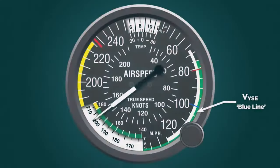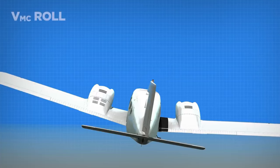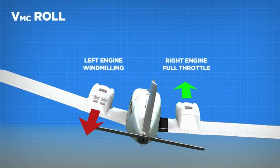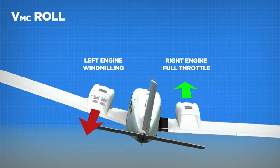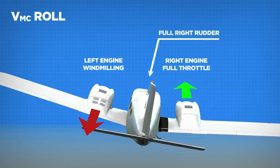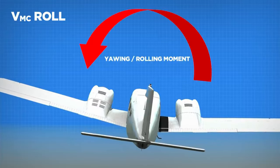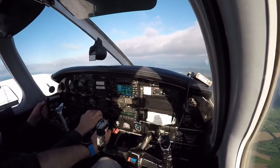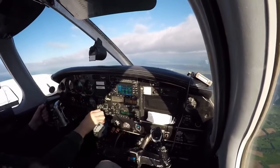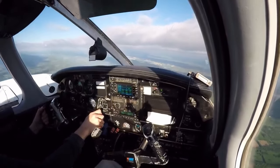With the landing gear retracted and the flaps set to the takeoff position, the pilot slows the airplane to approximately 10 knots above VSSE or VYSE, whichever is higher, and trims for takeoff. For the remainder of the maneuver, the trim setting remains unaltered. The pilot selects an entry heading and sets high RPM on both propeller controls. Power on the left engine is throttled back to idle as the right engine power is advanced to the takeoff setting. The landing gear warning horn will sound as long as a throttle is retarded; however the pilot listens carefully for the stall warning horn or watches for the stall warning light.